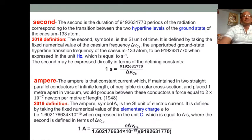Next, the second. Initially it was the duration of 9,192,631,770 periods of the radiation corresponding to the transition between two hyperfine levels of the ground state of cesium-133 atoms. But in 2019 it was redefined.